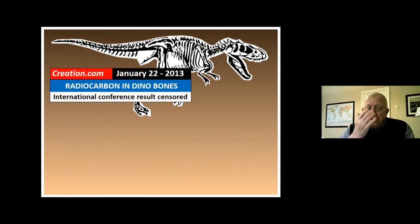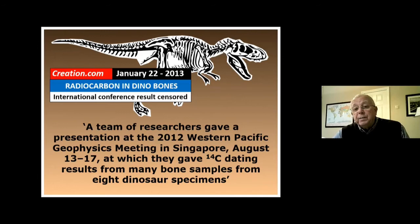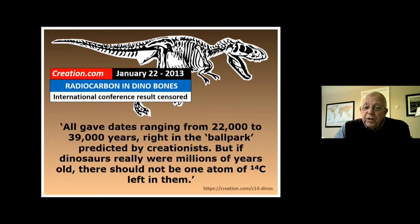January 2013 — radiocarbon and dinosaur bones. Radiocarbon dating is good up to about 100,000 years. A team of researchers gave a presentation at the 2012 Western Pacific Geophysics Meeting in Singapore, giving carbon-14 dating results from many bone samples from eight dinosaur specimens. All gave dates ranging from 22,000 to 39,000 years — right in the ballpark predicted by creationists. If the dinosaurs really were millions of years old, there should be not one atom of carbon-14 left in them.